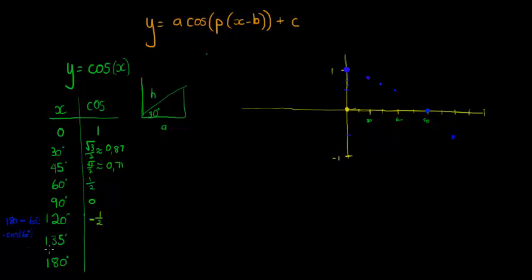Then 135 is 180 minus 45, so it's the same as negative cos of 45, which means it's negative 0.71. So negative 0.71 is more or less at this point, so 135 there should be more or less there.